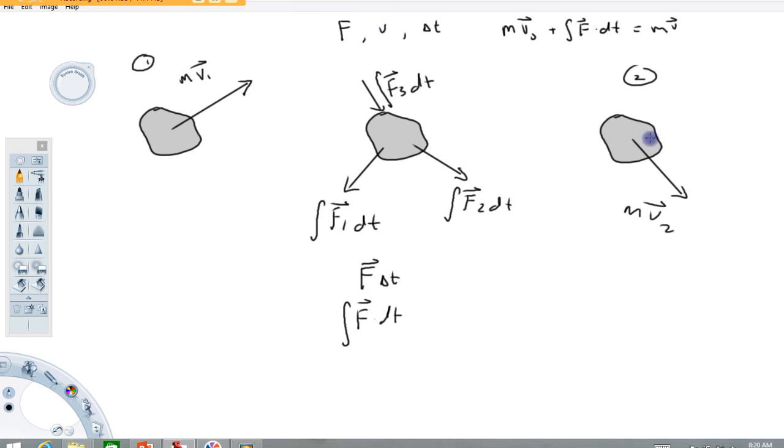Then position two: draw your velocity vector, tack a mass on, now it's a momentum. So that's a little bit about how to draw an impulse momentum diagram.